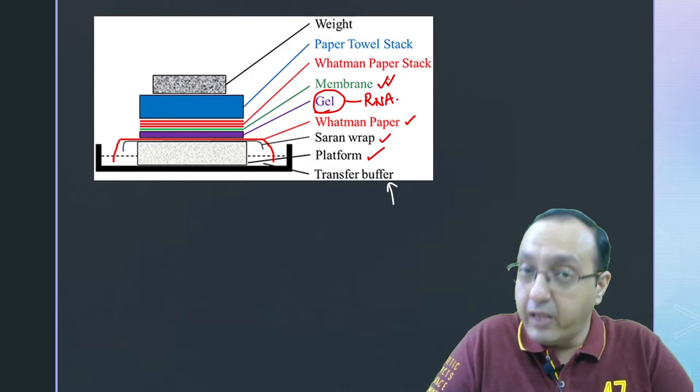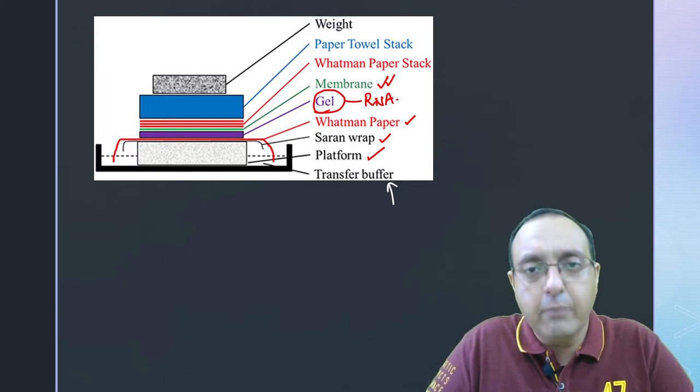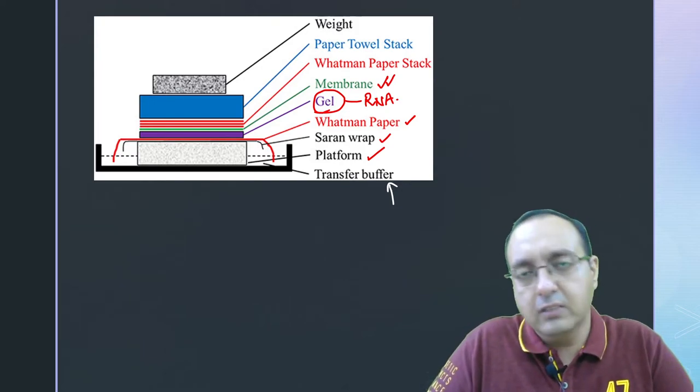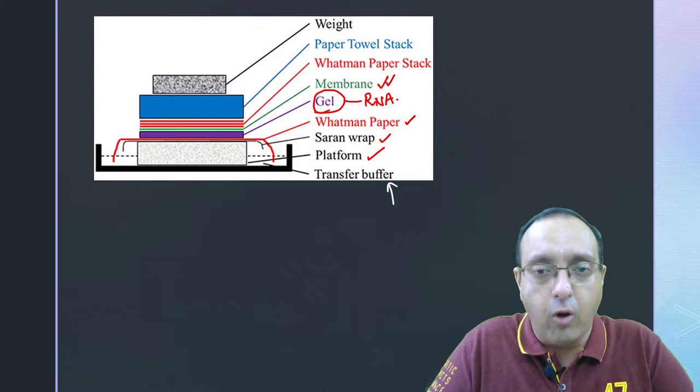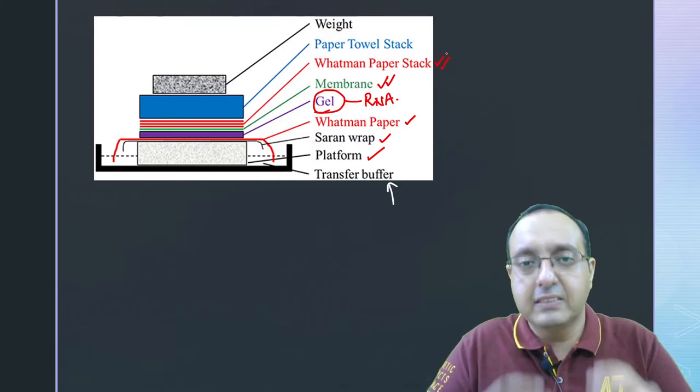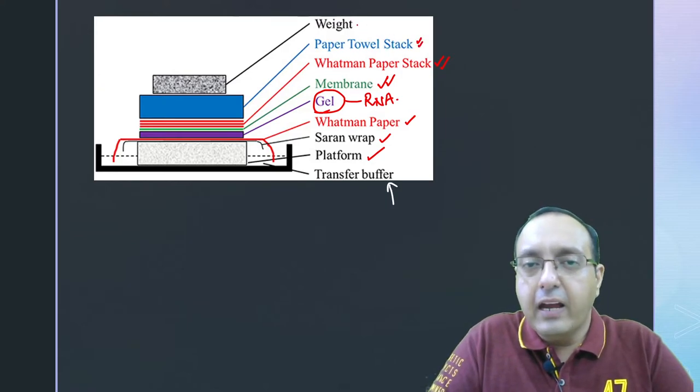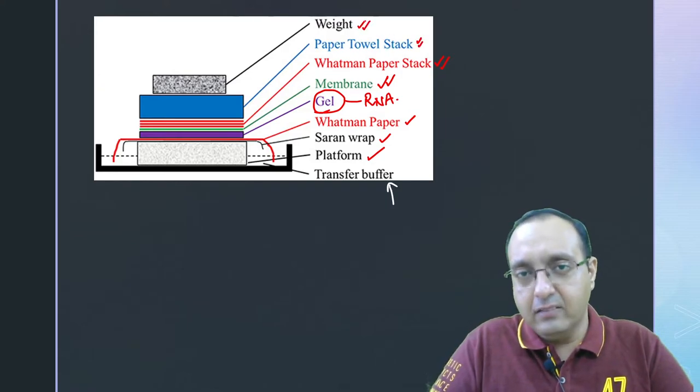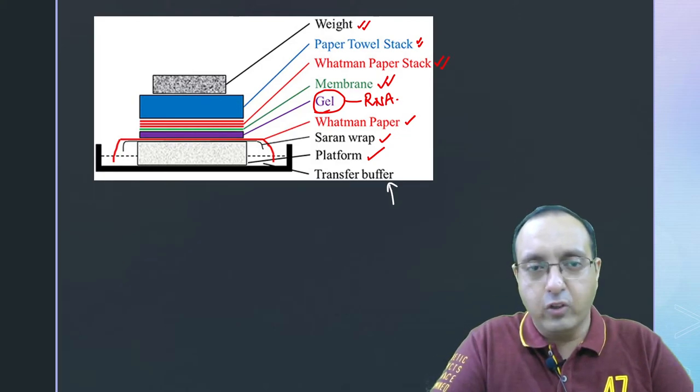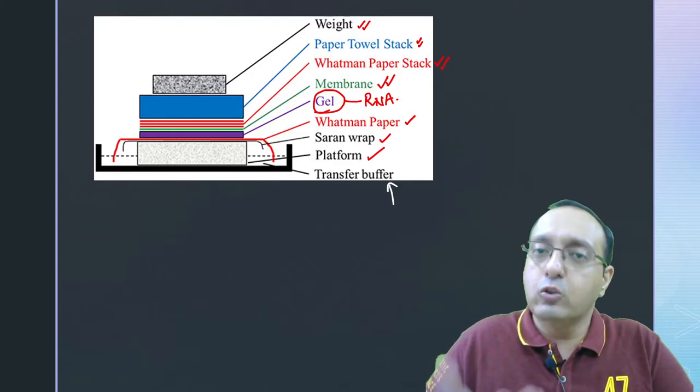Here is the membrane. This could be nylon membrane or nitrocellulose membrane. PVDF membrane is usually not used, it is reserved for Western blot. Then we have another stack of Whatman paper, a big stack and paper towels. And a lot of weight is added on the top to help in the transfer from the gel to the membrane.